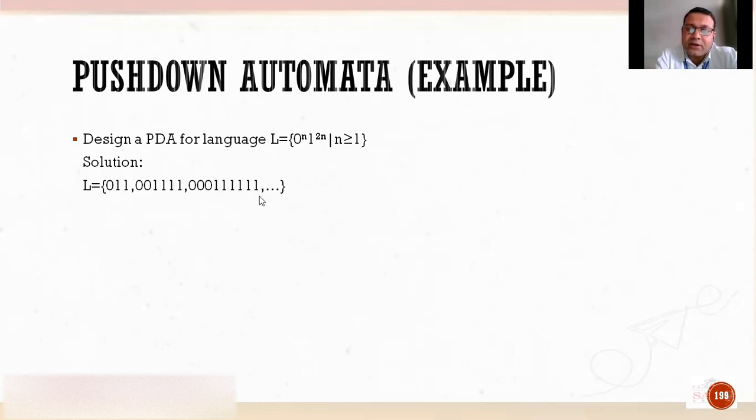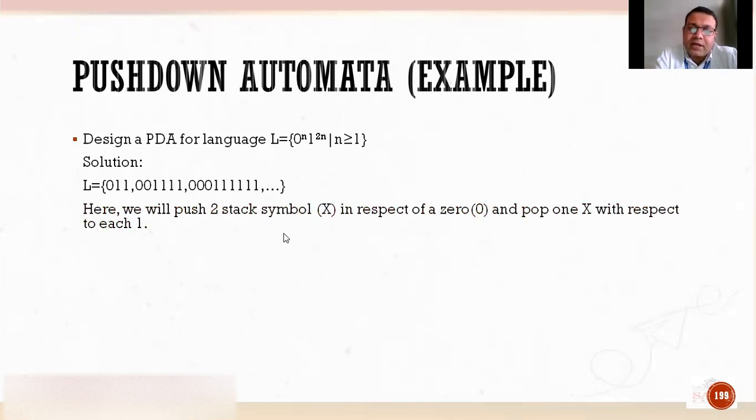Now I have to make a logic so that we can construct the transition rules of its PDA. So what is the logic by which I'm going to construct its PDA? When a zero comes, I will push 2 stack symbols - 2x or 2a or whatever stack symbol you have assumed. You can push 2, 4, 6, however many. For this question I will push 2x in the stack. And whenever one comes, I will pop one x at a time, because in popping we have a limitation - we can pop only one element from the stack at a time.